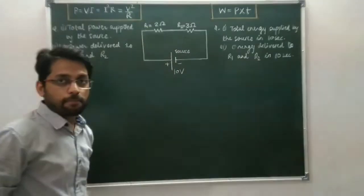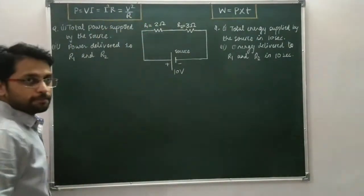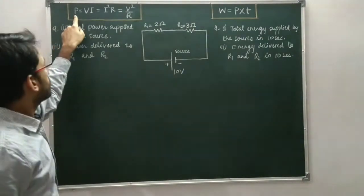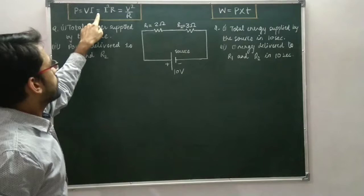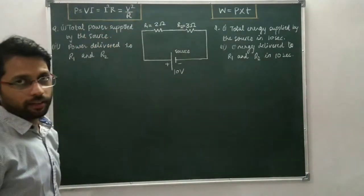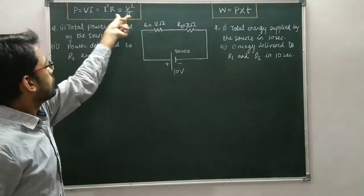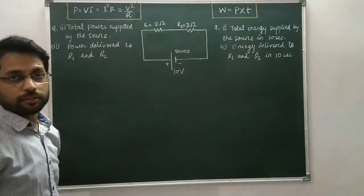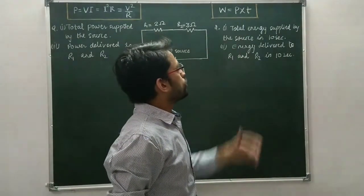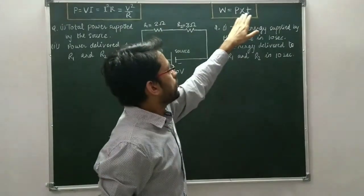First of all, these are the formulas for the calculation of power: P is equal to V times I; P is equal to I squared R; P is equal to V squared by R. We use the formula as per convenience. And here we have a formula for energy: electrical energy is equal to power multiplied by time.